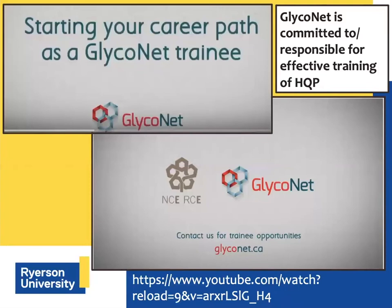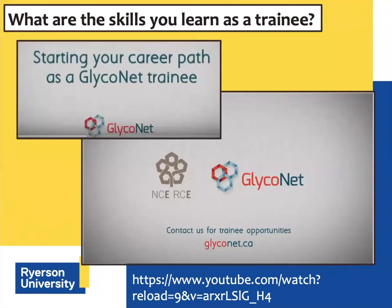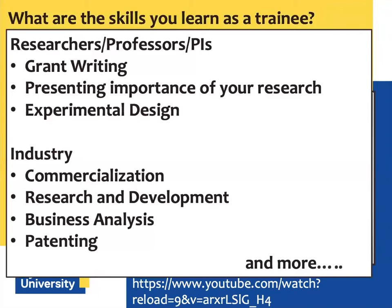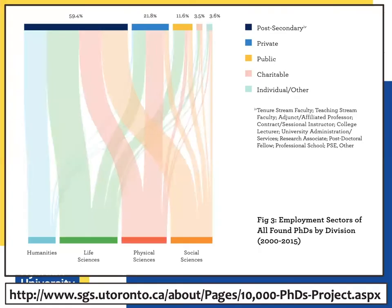This is part of the trainee program for GlycoNet. I looked at a great video on YouTube showing that GlycoNet is committed to effective training of HQP — an NCE requirement. What does that mean in terms of professional development? As a trainee you're learning skills around academic science: how to write a paper, design experiments, present the importance of your research, develop an idea into commercialization, how to pitch an idea, how to patent. Some people talked about business analysis and a whole bunch of other skills.